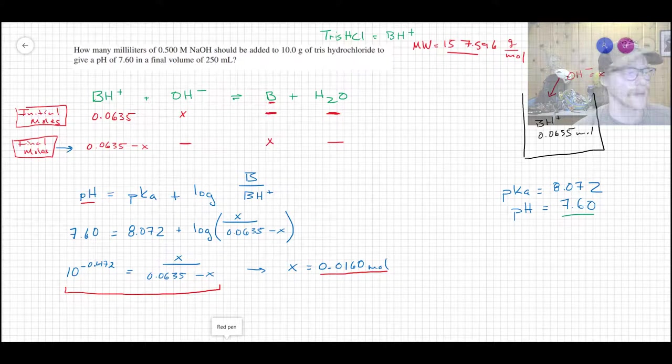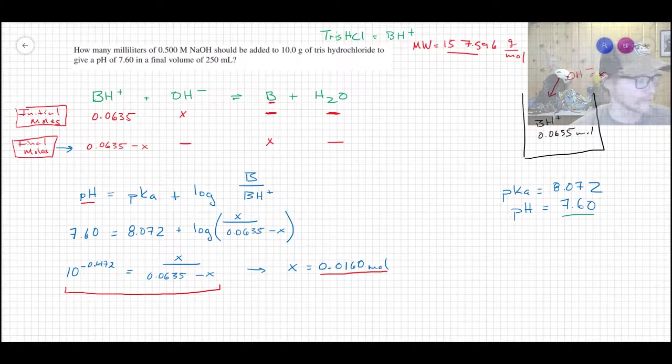So permutate this and I get an expression. So if I subtract the 8.072 from 7.6, I get -0.472. So I need to take 10 to that to get rid of the log term. That gives me this part of the expression there. Rearrange that, solve for X, and I get 0.016 moles. Remember that we were thinking and talking in terms of moles here, not in terms of concentrations.